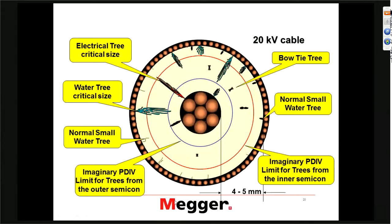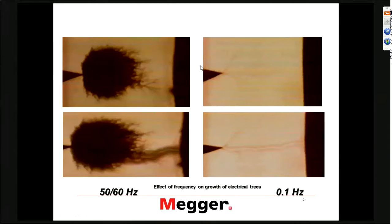The small trees are not affected, but that's why we say that a service-age cable where you have this large tree and you do a VLF test, you bring it to fruition. Once this is done, you have the small ones — small today, but in three or four years they could have reached a longer length and become now a critical thing. That's why you might want to retest the cable after some period of time.